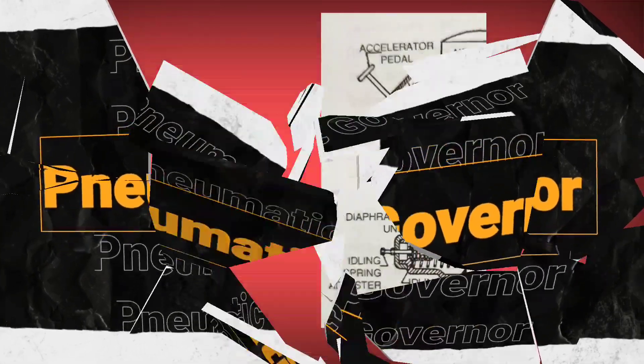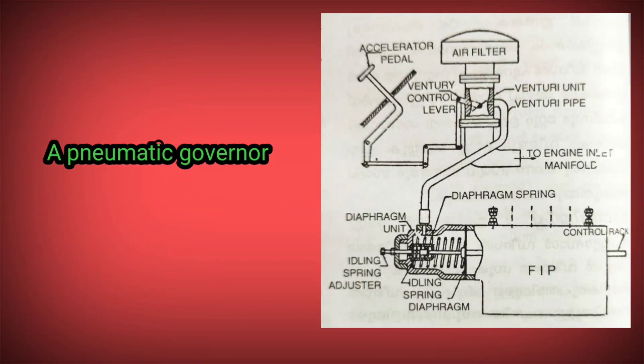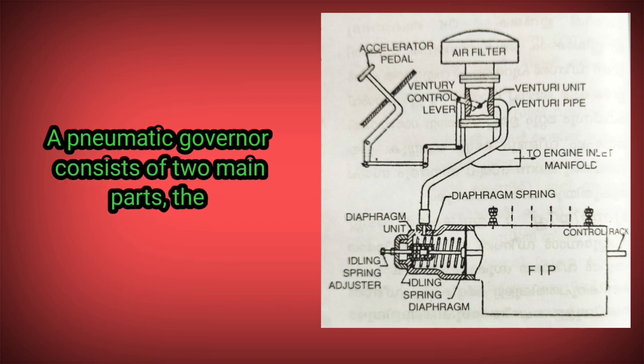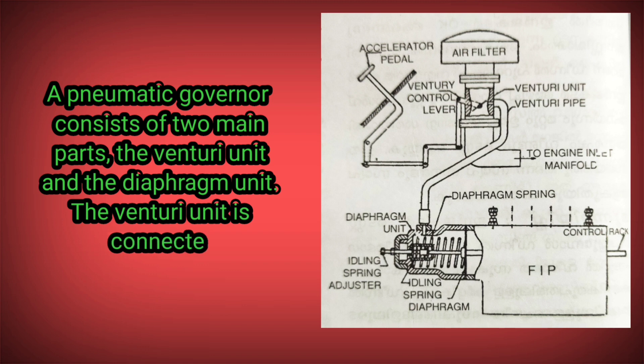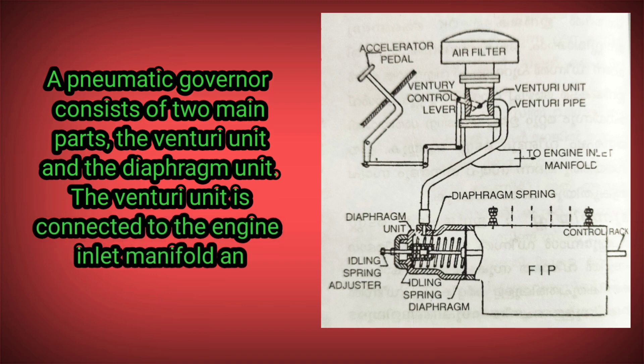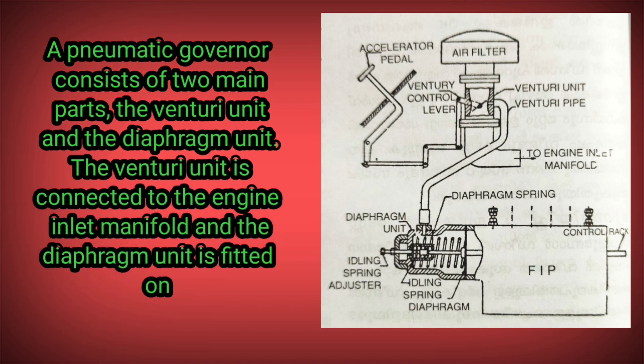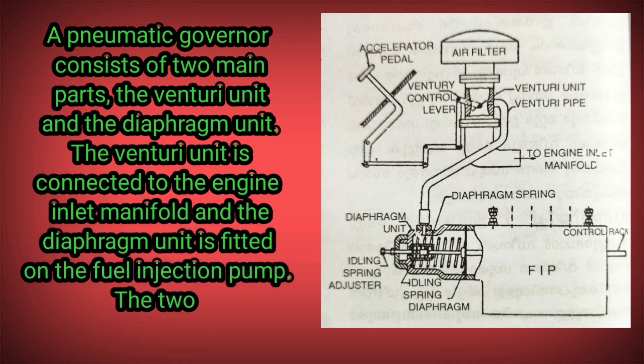A pneumatic governor consists of two main parts: the venturi unit and the diaphragm unit. The venturi unit is connected to the engine inlet manifold, and the diaphragm unit is fitted on the fuel injection pump. The two units are connected by a vacuum pipe.